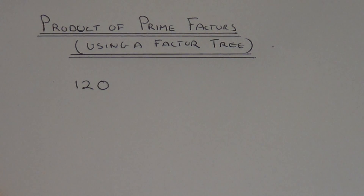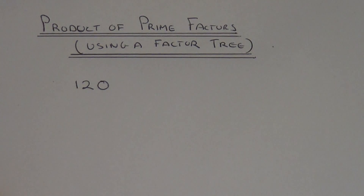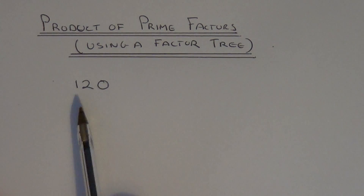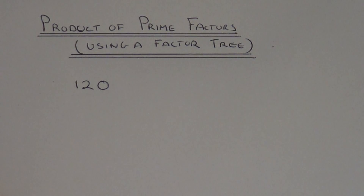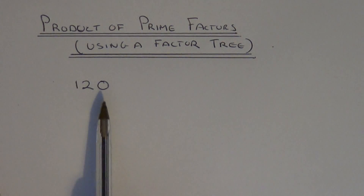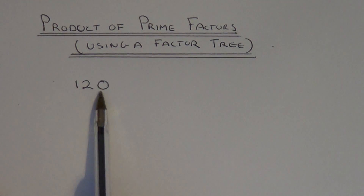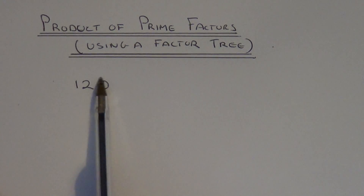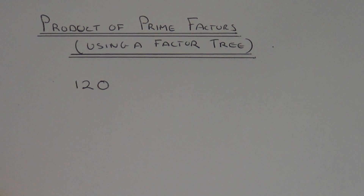Today I'm going to show you how to write down any number as a product of prime factors. So let's write down 120 as a product of prime factors. First of all, what you need to do is think of two numbers which multiply together to give you 120. The easiest one to go for is 12 times 10, because you have a zero at the end of 120.